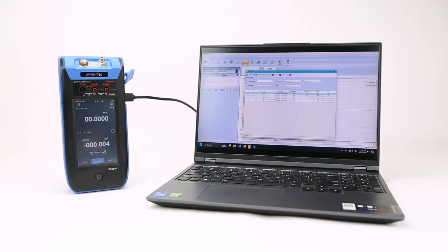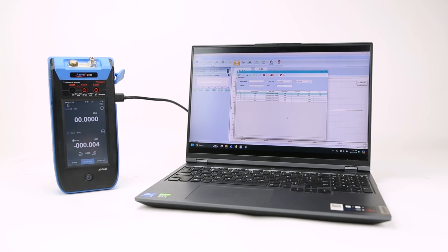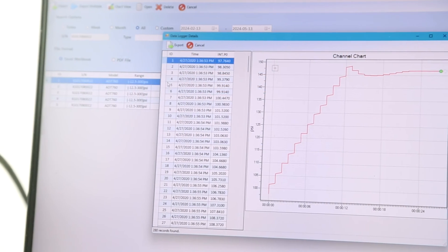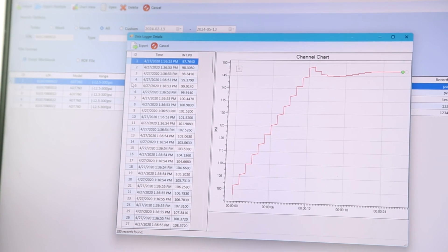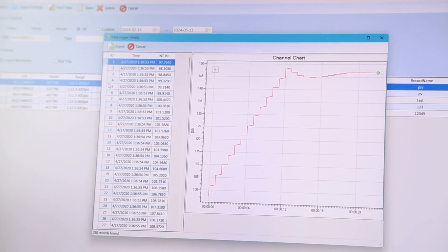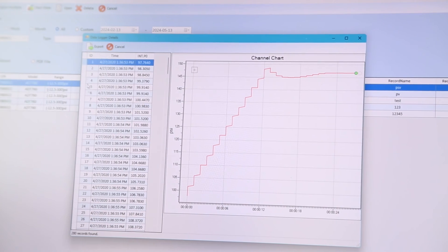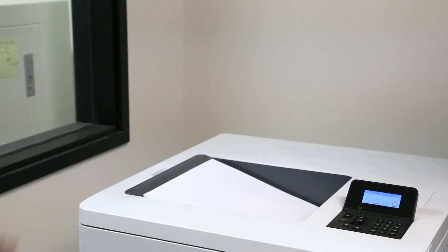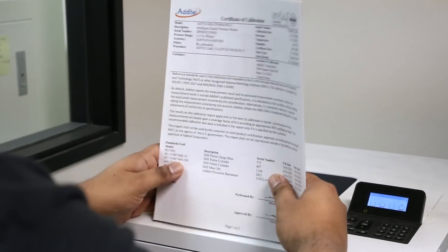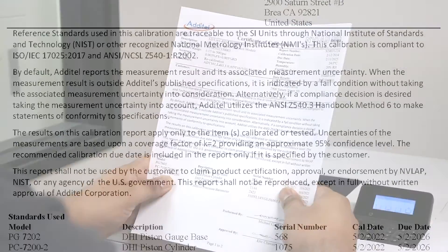Once test data has been collected, it should be entered or uploaded into calibration software. These programs will usually function as both a library of tests and devices, and as a calculator to ensure the variables of the calibration are correctly defined and recorded.